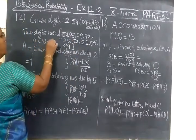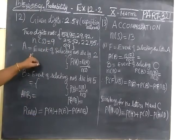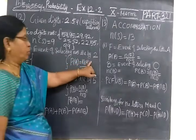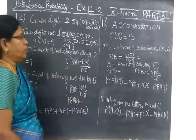So N(S) equal to 9. Now we are going to select event of selecting numbers divisible by 2. Now you see the numbers, we select which are all divisible by 2.